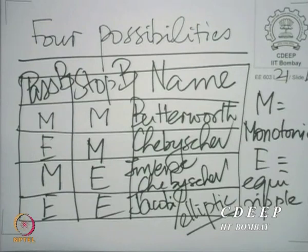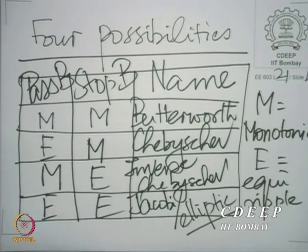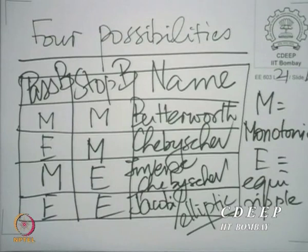In this course, we shall only look at the Butterworth and the Chebyshev forms of approximation, and we shall give a hint on how to build the inverse Chebyshev design. It is not too difficult to go from the Chebyshev to the inverse Chebyshev, and we shall leave it as a task for you to do on your own given some steps of the process.